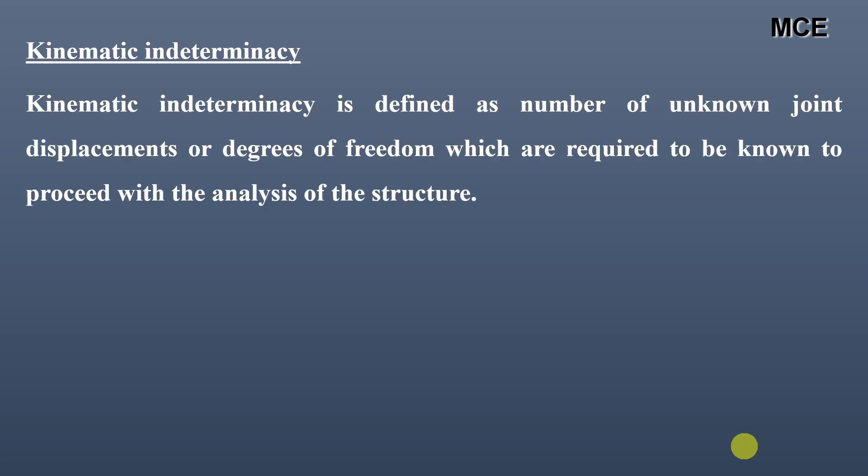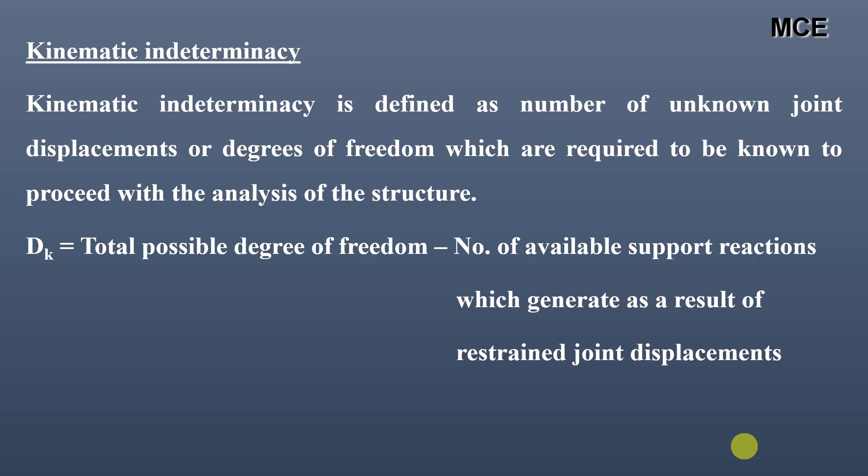First we will learn what is kinematic indeterminacy. Kinematic indeterminacy is defined as the number of unknown joint displacements or degrees of freedom which are required to be known to proceed with the analysis of the structure. The degree of kinematic indeterminacy (DK) is given as total possible degrees of freedom minus the number of available support reactions which generate as a result of restrained joint displacements.